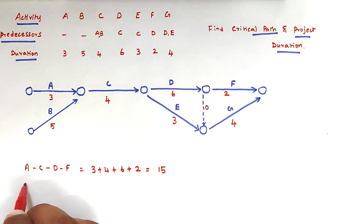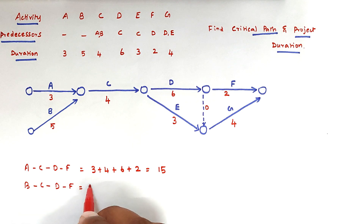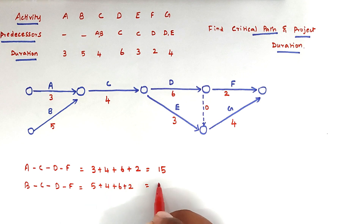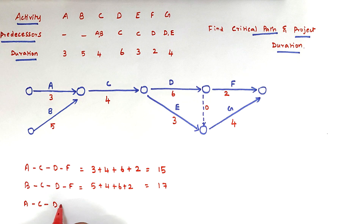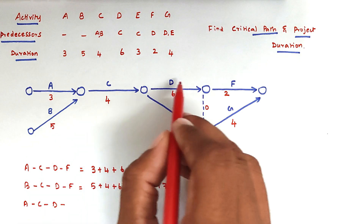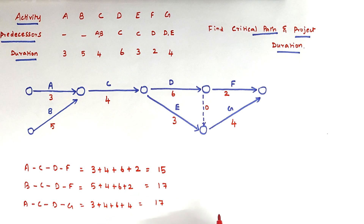The next path is B, C, D, F with a duration of 5 plus 4 plus 6 plus 2, which equals 17. Then path A, C, D, G has a duration of 3 plus 4 plus 6 plus 4, which is again 17.